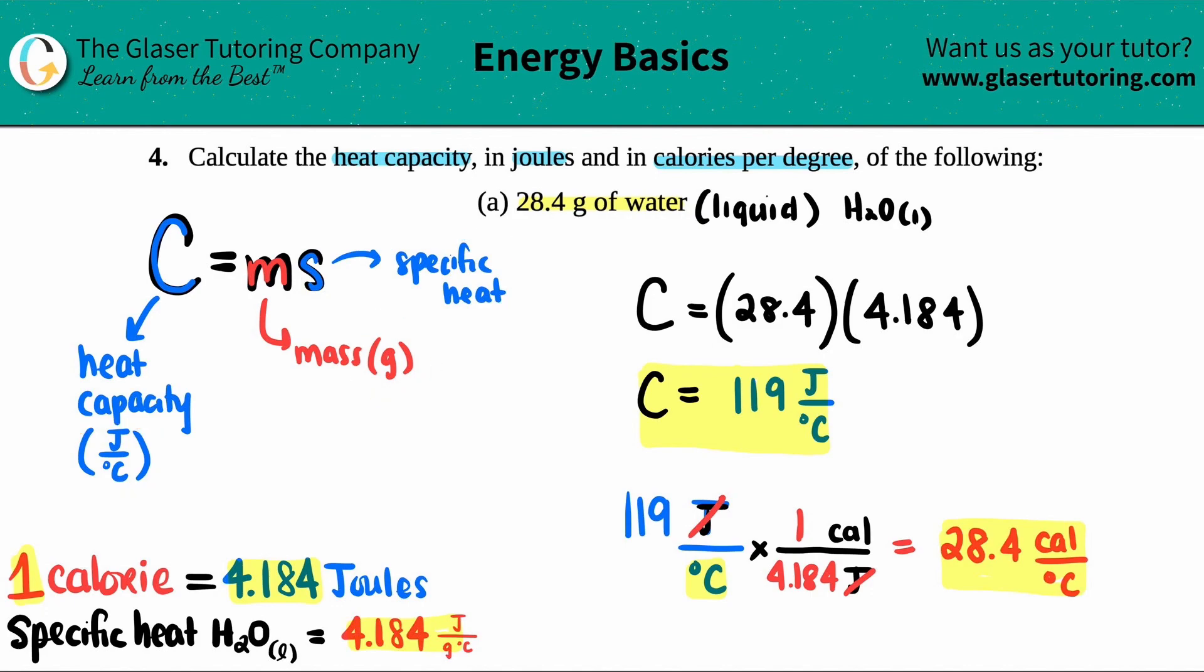Specific heat is always going to be joules per gram times degree Celsius. Usually those are pretty standard numbers. They're not going to really give you any other unit, but if you do, just convert.